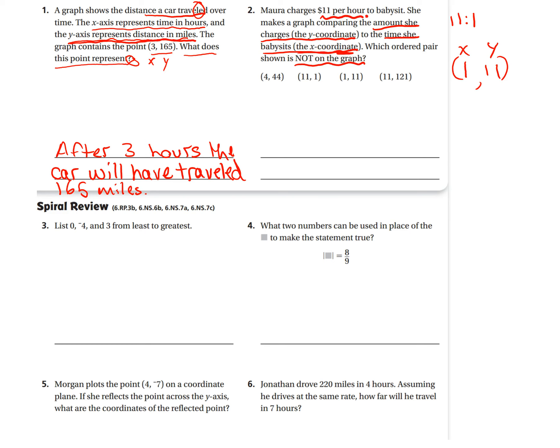Well, I can already see right now which one does not have 1, 11. Or if I continued this, it would be $2, 22, then $3, 33, and so on. So I can see right here this is flipped. She told us that the amount she charges is the y. And on this ordered pair, they put the amount she charges as the x. So which ordered pair shown is not on the graph? This ordered pair right here, (11, 1).